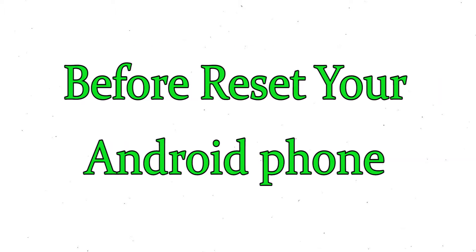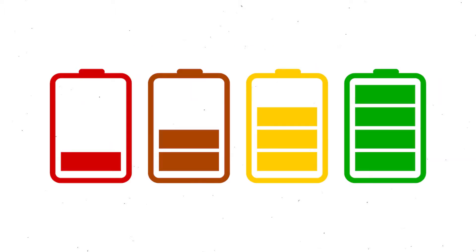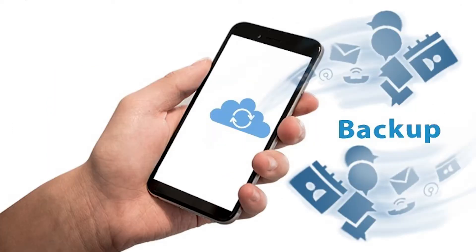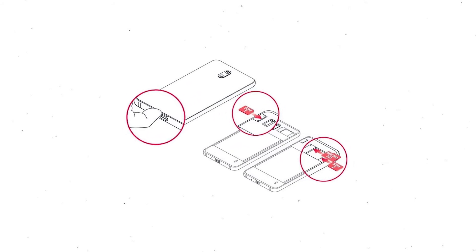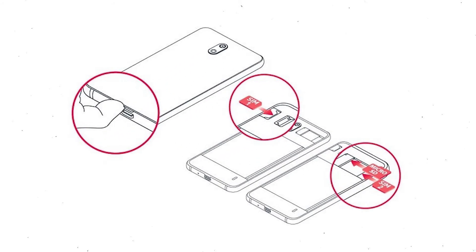Before resetting your mobile, make sure the battery is properly charged — if less than 50%, charge your mobile. You need to make sure that the data on your device is backed up so you do not lose valuable photos or documents. Reset deletes all your mobile data, so you should back up all important data and remove your SIM and SD card.